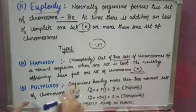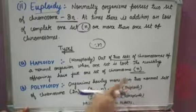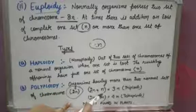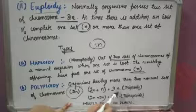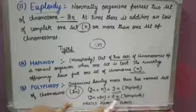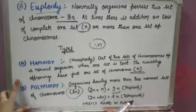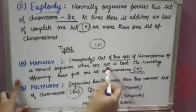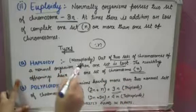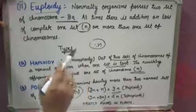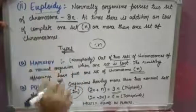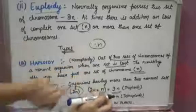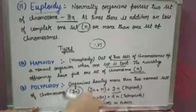Polyploidy refers to organisms having more than two normal sets of chromosomes. 2n plus n gives 3n, called triploids; 2n plus 2n gives 4n, called tetraploids. In haploidy, the two sets of chromosomes are lost and only one set remains. In polyploidy, more than two sets are present.